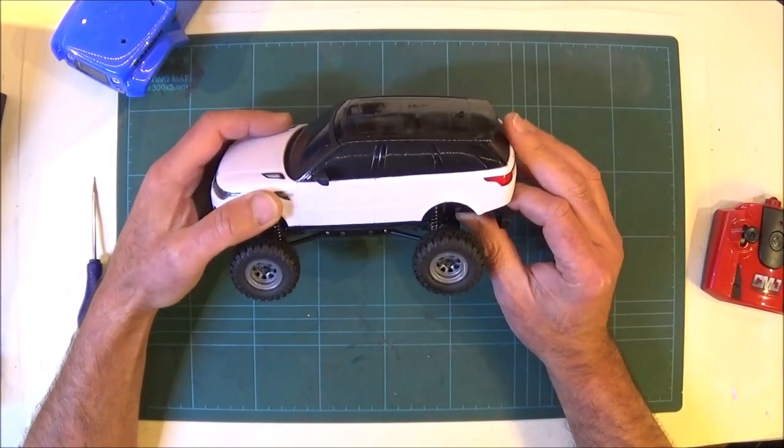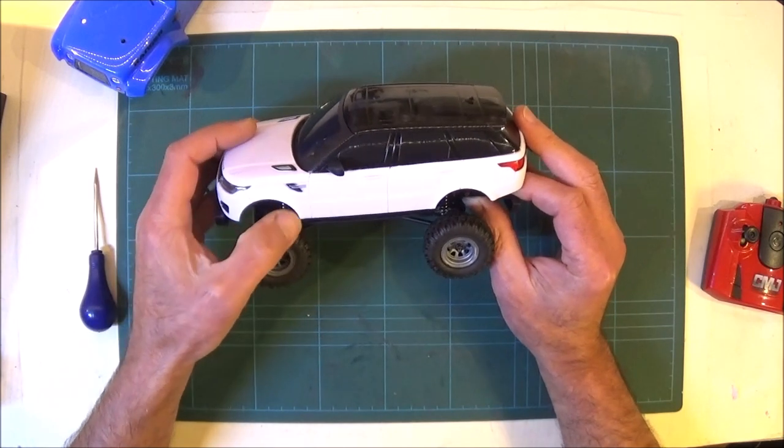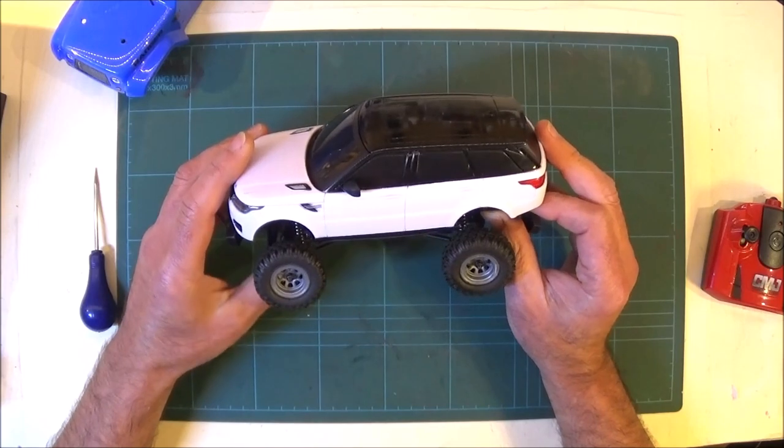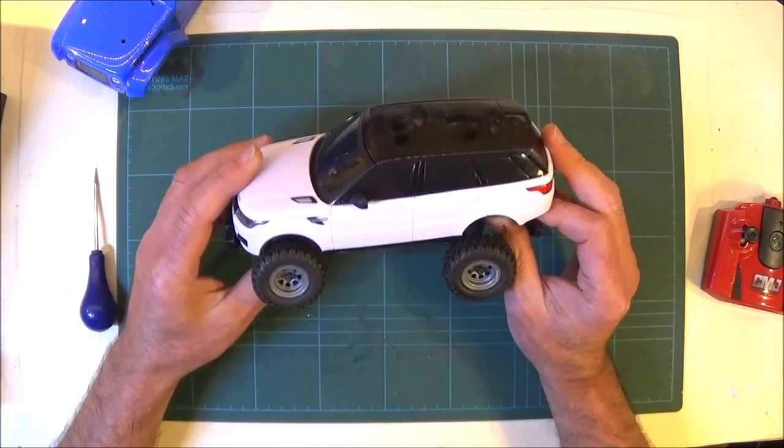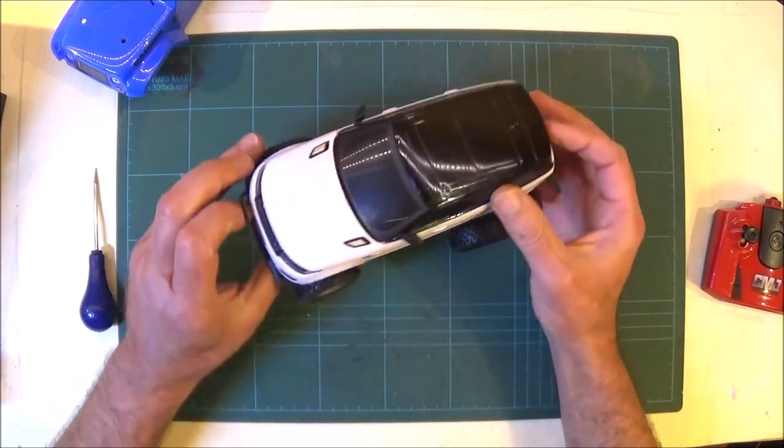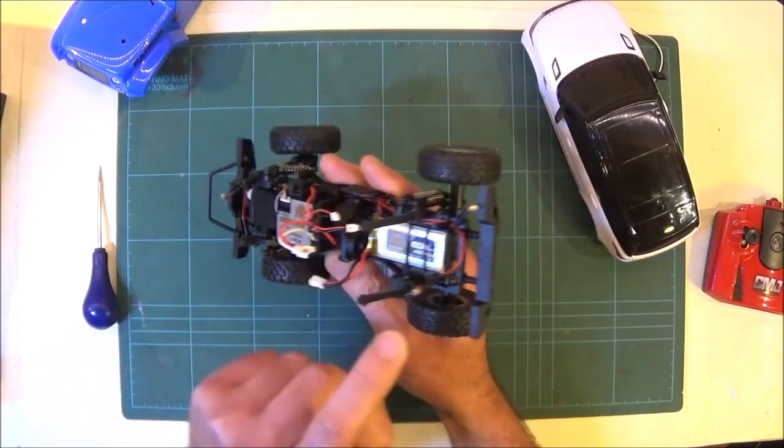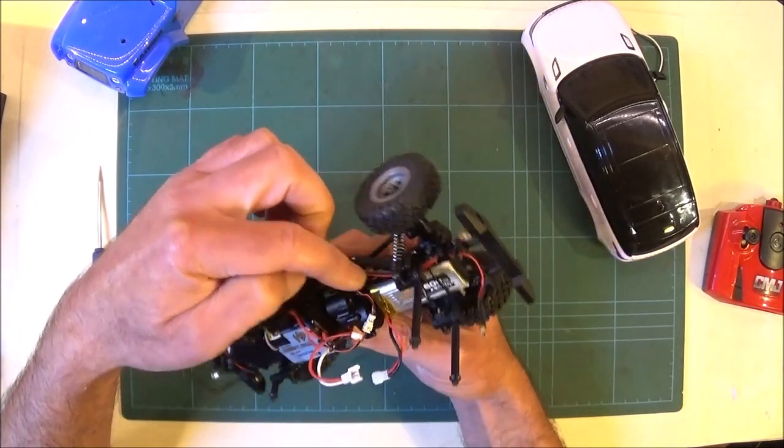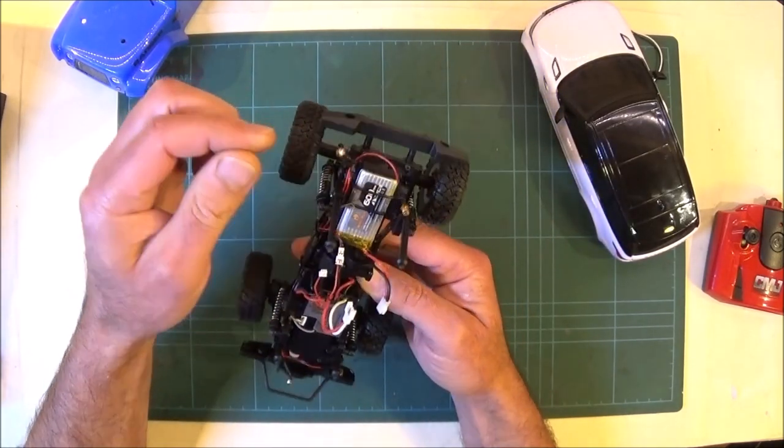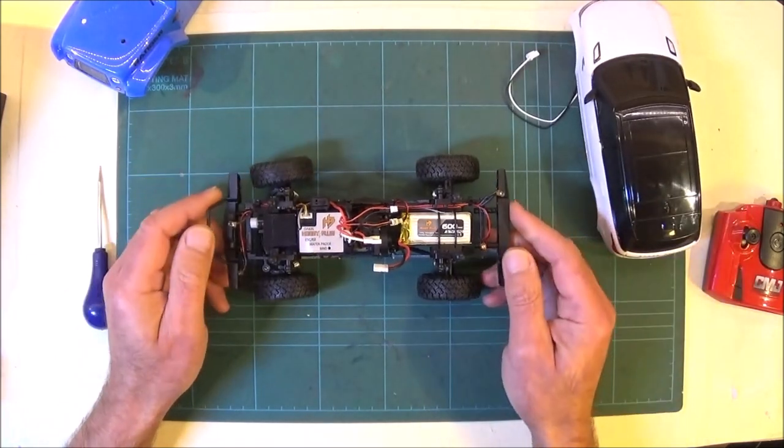Luckily the wheelbase seems about right. I might need to adapt these wheel arches because obviously the tyres and the wheels on the CR24 are much bigger. But I think just looking at that it might just work. So what I'm going to do now is I'm going to take the front bumper and the rear bumper off the CR24. I'm going to disconnect all the wiring for the LEDs and see if I can adapt this to fit with the new body. So let's give it a go.